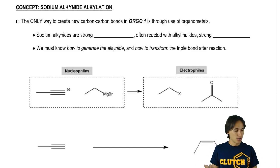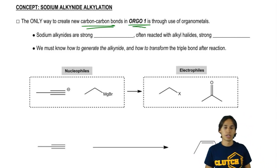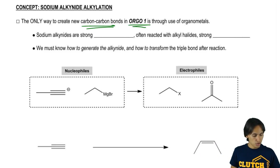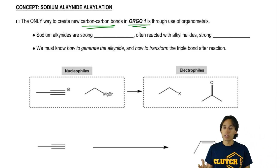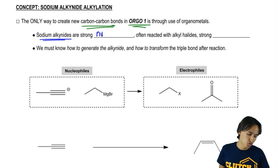Basically, you guys know this is the only way to make carbon-carbon bonds in Orgo-1 is through organometals, and strong sodium alkanides are really commonly used organometals because they happen to be strong nucleophiles.